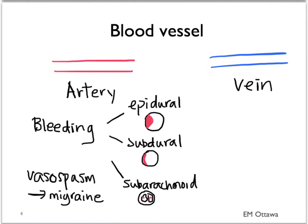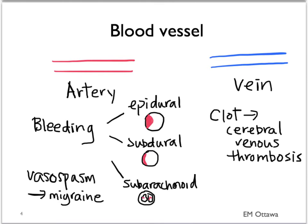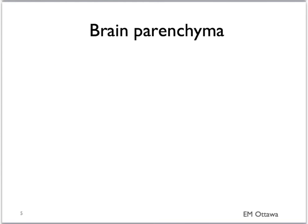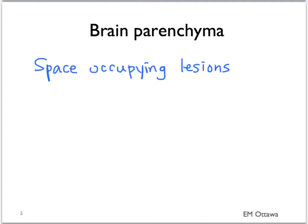Moving on to the veins — they can clot, also known as cerebral venous thrombosis. Moving on to the brain parenchyma, any space-occupying lesion in the brain parenchyma can lead to headache. These include blood, abscess, or mass.